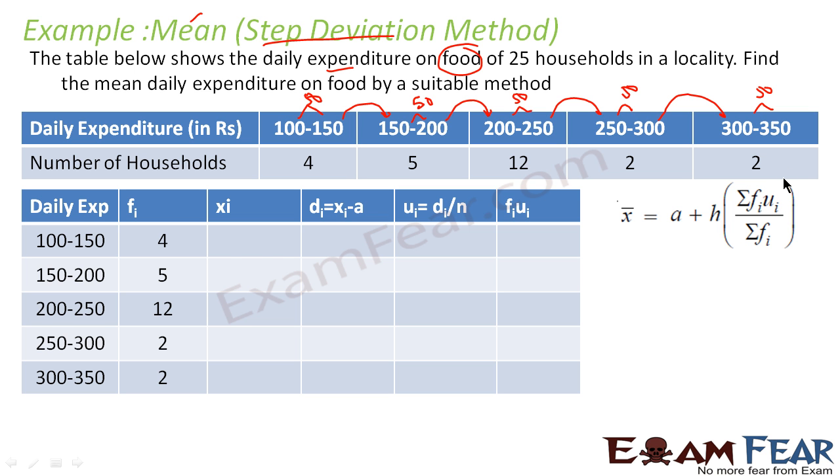So xi will be (100 + 150) / 2, that is 125. In this case (150 + 200) / 2, that is 175. In this case (200 + 250) / 2, that is 225.